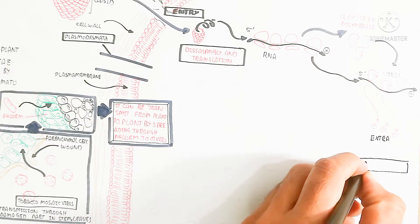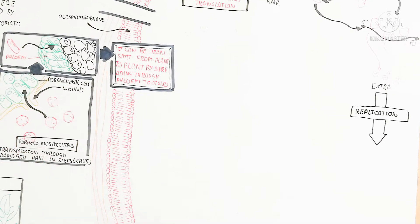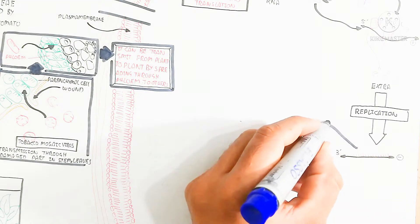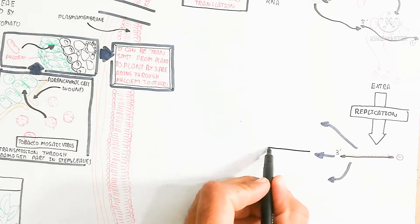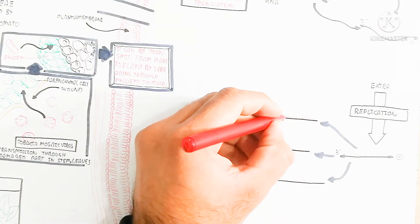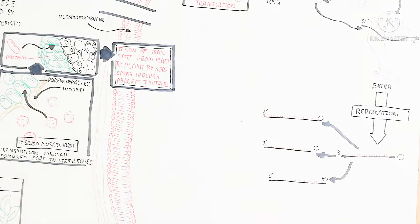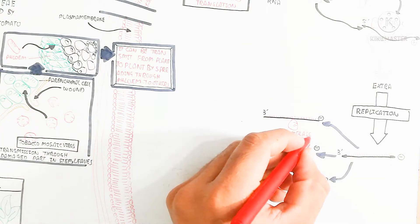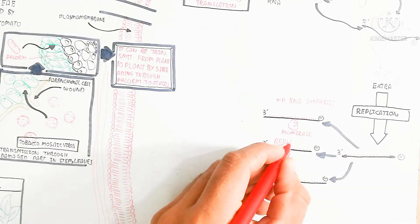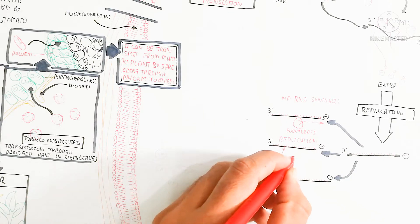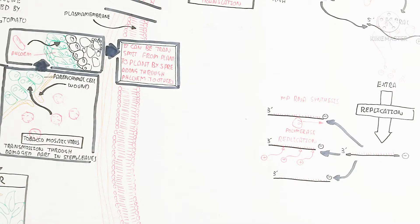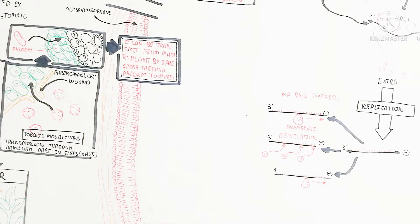The newly produced RNA is anti-parallel, running in the 3-prime direction. Replication occurs and this increases the amplification of the RNA, producing a 3-prime negative strand. This can then be converted back to the original RNA form of the tobacco mosaic virus. The polymerase enzyme uses this to carry out replication, amplifying the 3-prime RNA. Additionally, MP RNA synthesis occurs — MP stands for the endoplasmic reticulum integral membrane protein. The polymerase enzyme is used to produce this membrane protein.